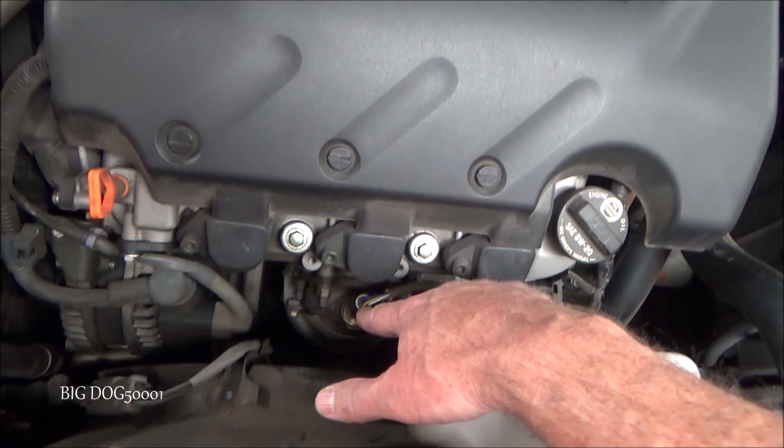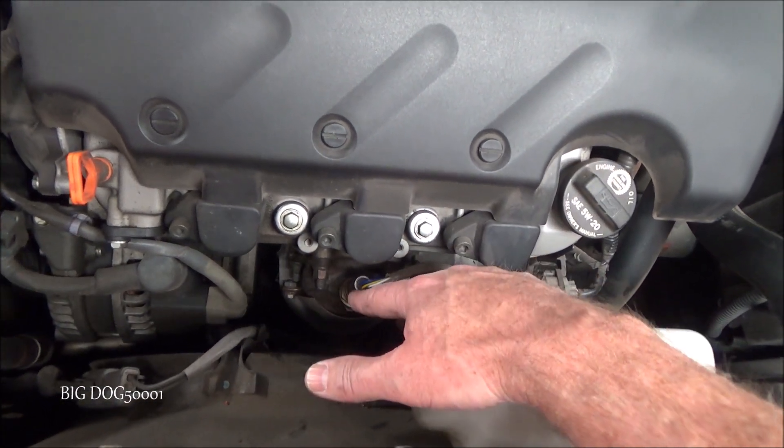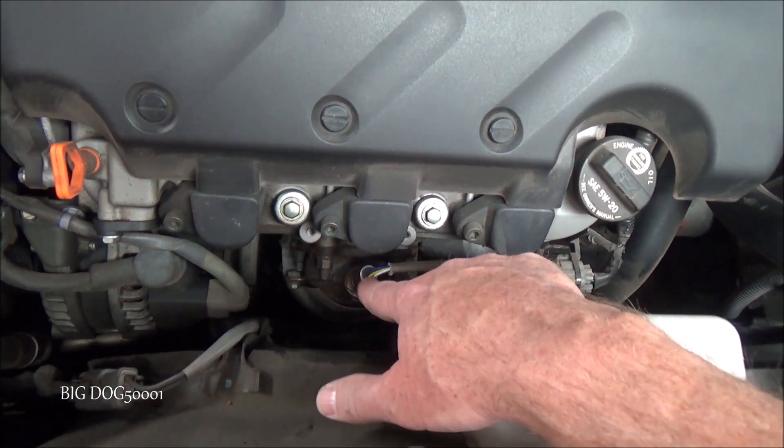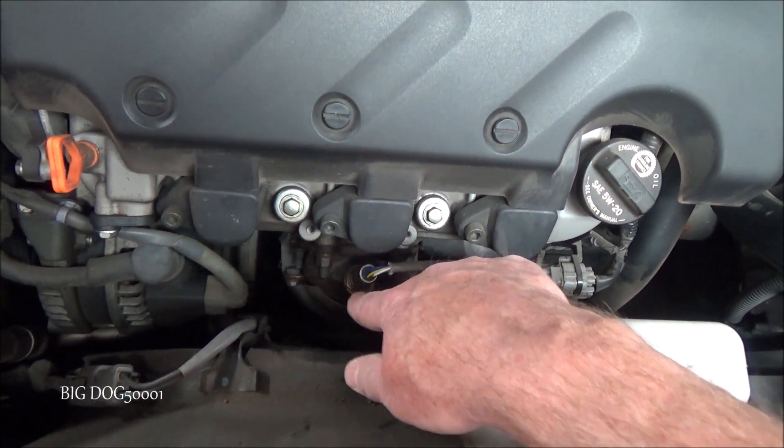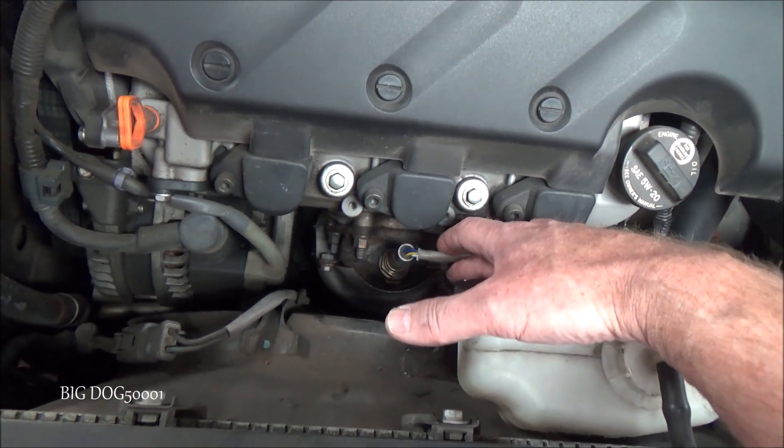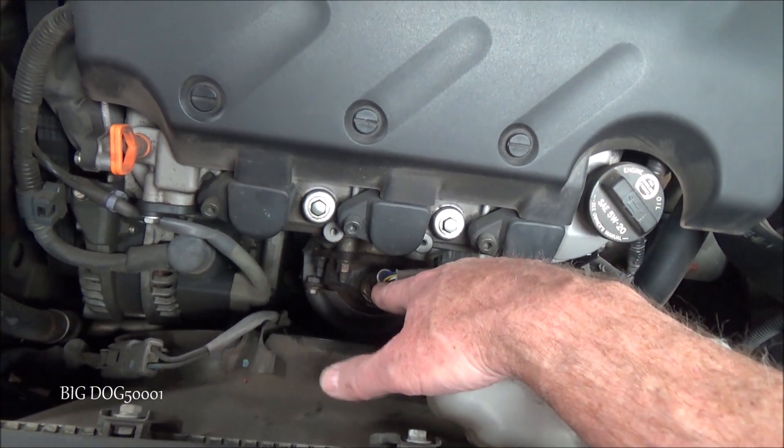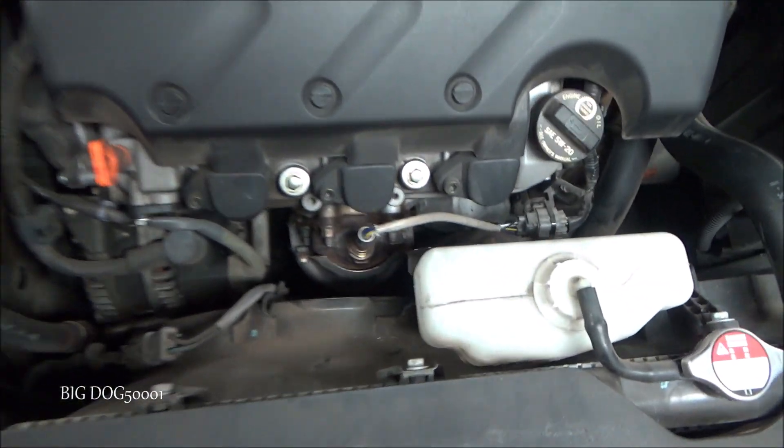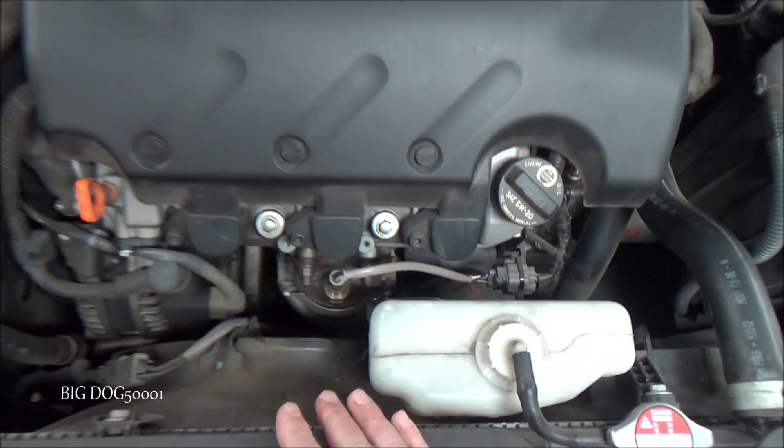This one that's before, on these newer vehicles or anything after 2000 or so, they switched over. Instead of using an oxygen sensor before the cat, most vehicle manufacturers use an AFR, air fuel ratio sensor, which is a little more accurate. It's along the same lines as an oxygen sensor, but it's not exactly the same thing.